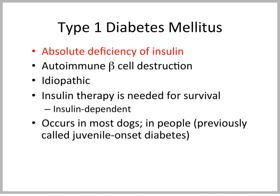In type 1 diabetes mellitus, we have an absolute deficiency of insulin. This type, many years ago, was called juvenile onset diabetes, because in people it primarily occurs in children or young people. We have an absolute deficiency of insulin with this type of diabetes. Usually that absolute deficiency is caused by an autoimmune destruction of beta cells. Sometimes we don't really know what the cause is, and we call that idiopathic.